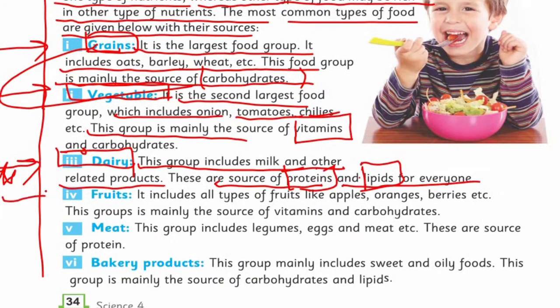Fruits — do you like them? Tell me your favorite fruit. Some of you like mango, strawberry, pineapple. The fruit group includes all types of fruits like apples, oranges, berries, etc. This group is mainly the source of vitamins and carbohydrates.